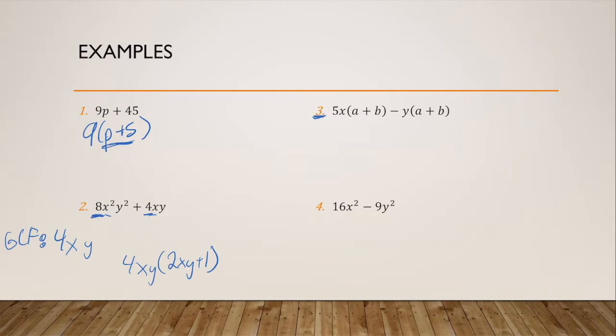For problem three, I have 5X times A plus B minus Y times A plus B. Their greatest common factor is A plus B. So I'm left with A plus B times 5X minus Y.